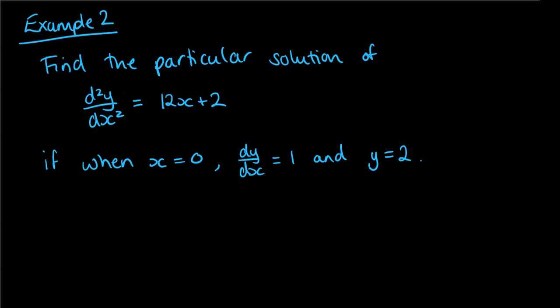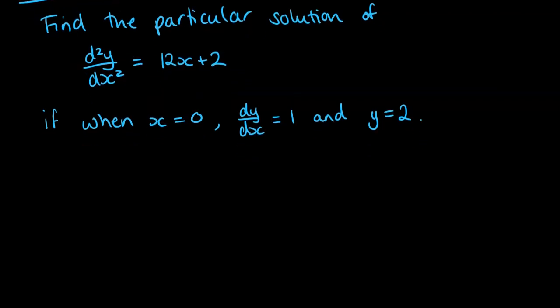And example number 2 takes us through finding a particular solution. And this time we have a second order derivative. So we're doing a second order equation. It means we're probably going to need to take two steps through this. We've been given some extra information to be able to work out those values of c that we've seen before. So if we're finding the particular solution of this, we're trying to get to y equals something.